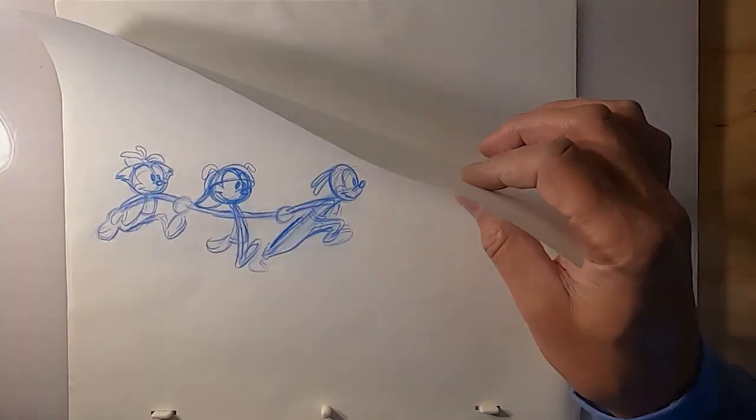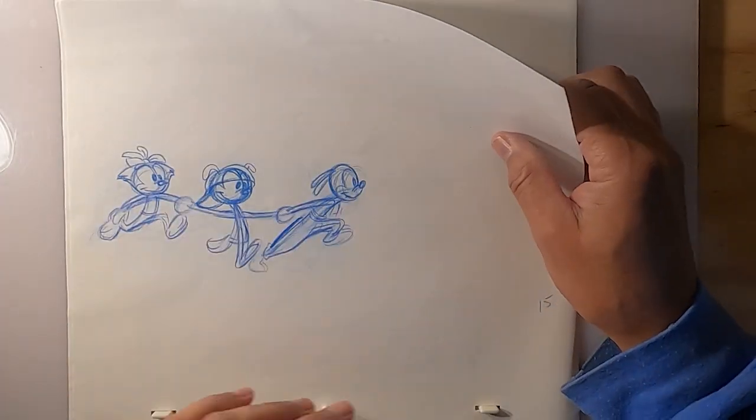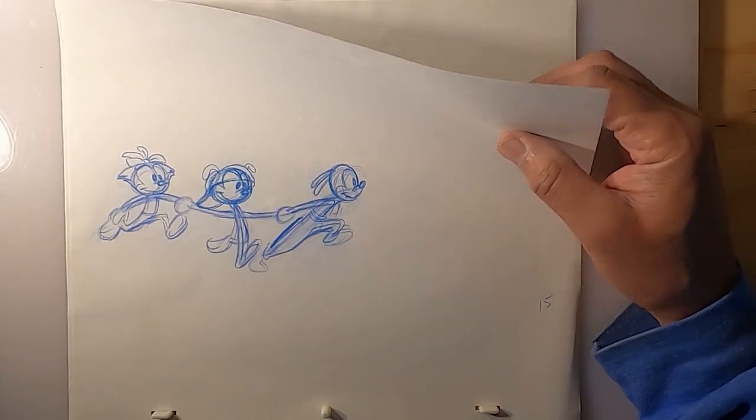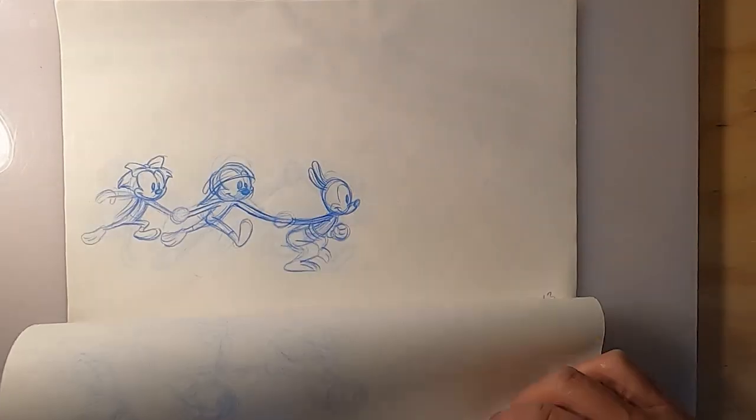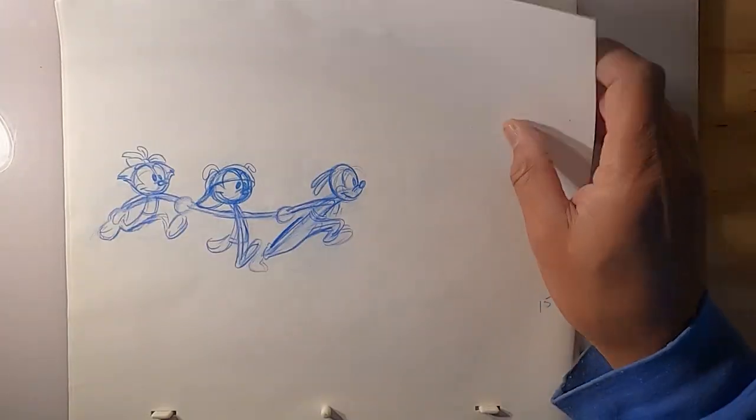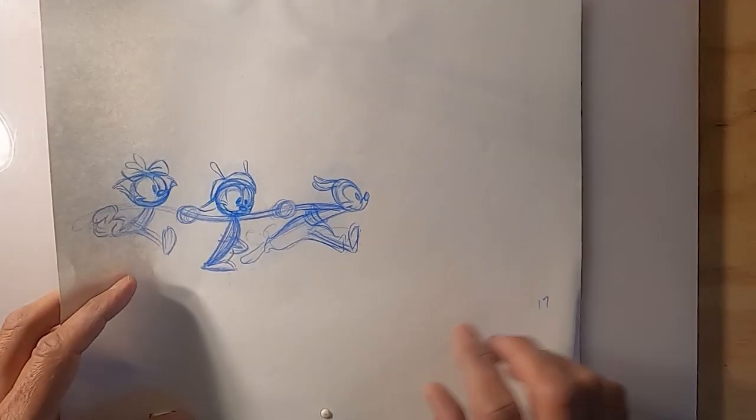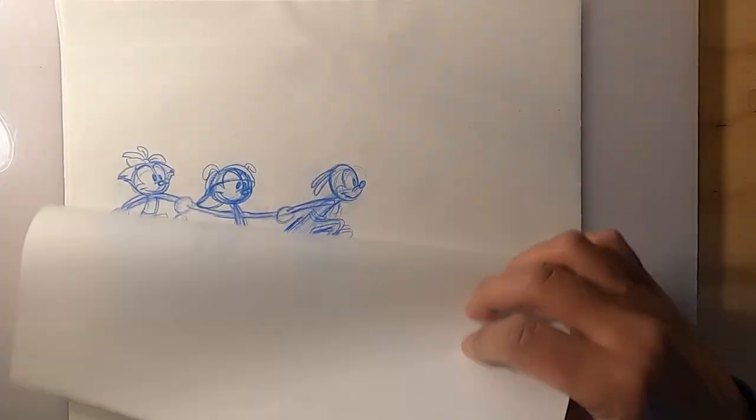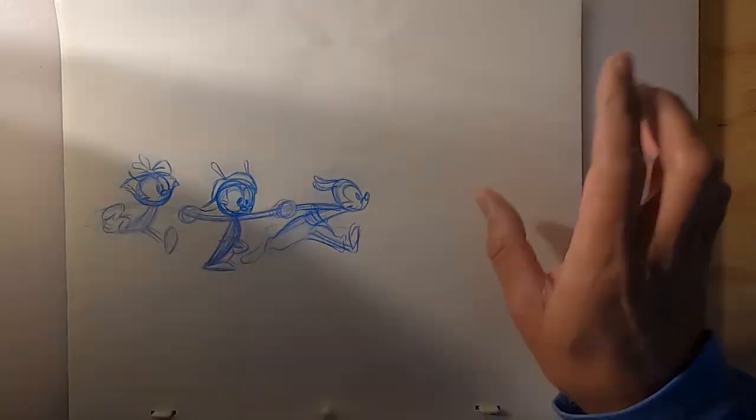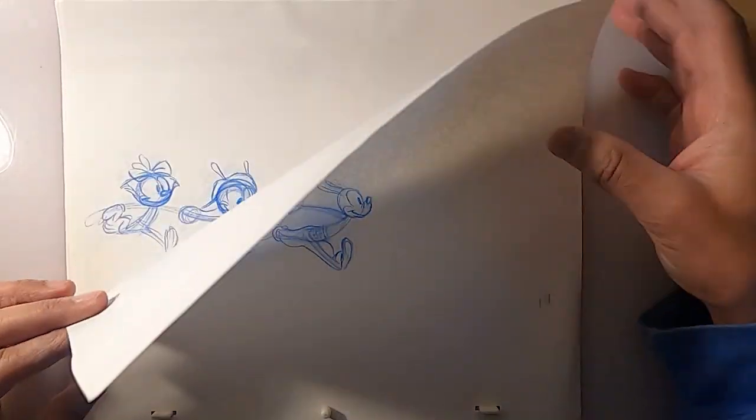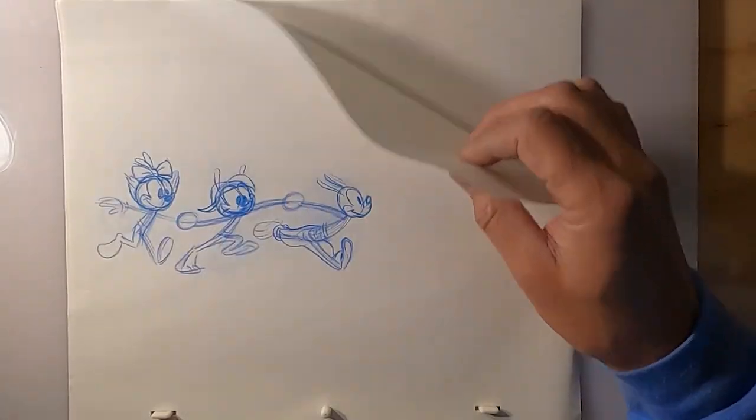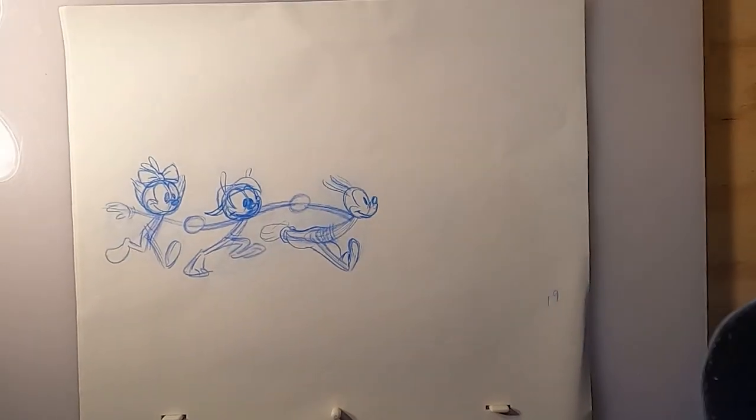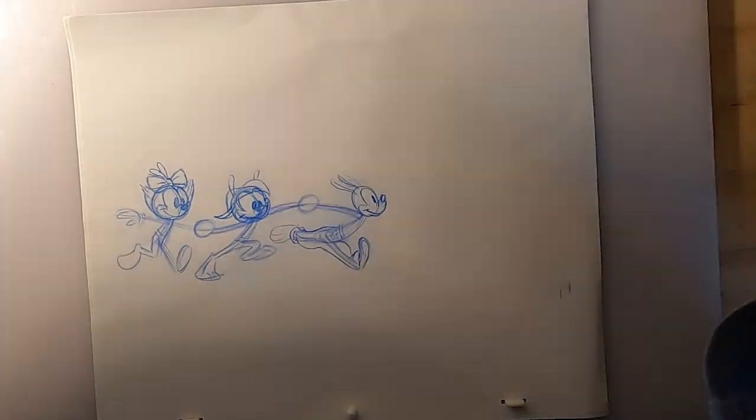And then what's happening here is the background is panning, panning this way. It gives the illusion that they're running and the background's going. And then continue to run. Not an easy thing having three characters running at one time, but somehow I managed. That's why we're there.